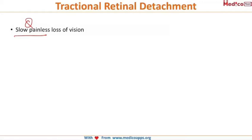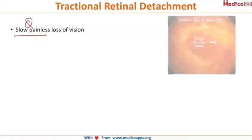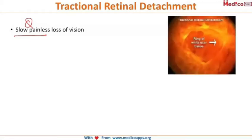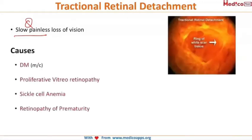The most important cause of tractional retinal detachment is diabetes mellitus — it is the most common cause — followed by proliferative vitreoretinopathy, sickle cell anemia, and retinopathy of prematurity. These are the causes of tractional RD.